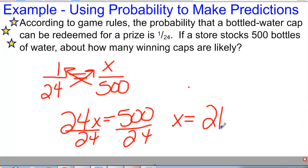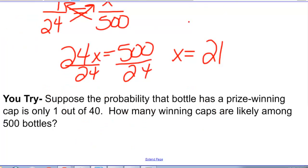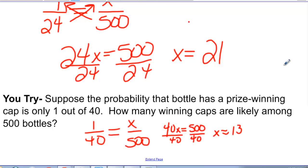So we're going to say about 21. Suppose that they've now changed the probability in this game and they made the winning number just 1 out of 40. How many winning caps would you predict there would be out of the 500 bottles then? So you can see and hopefully you got that if the probability was 1 out of 40, that you would predict that there would be about 13 winning bottle caps out of 500, between 12 and 13. So either one of those would be a valid prediction.